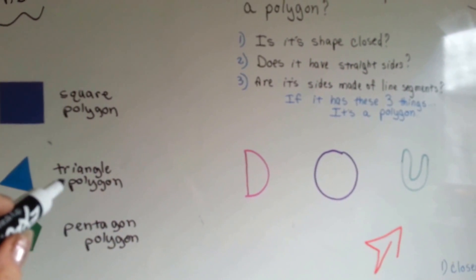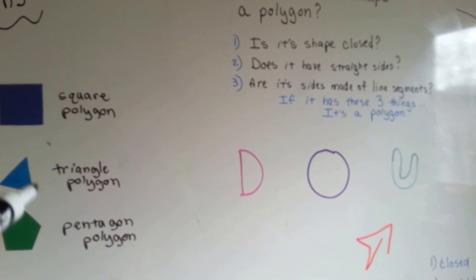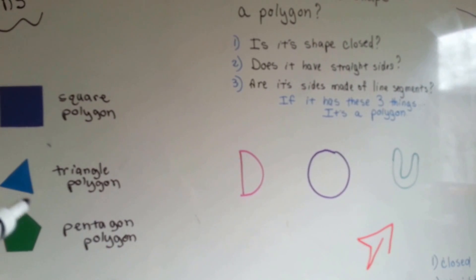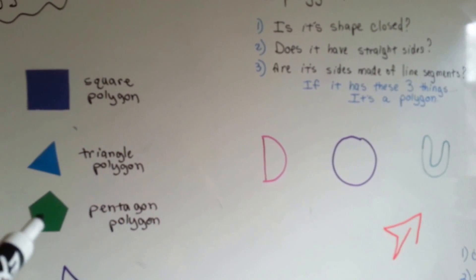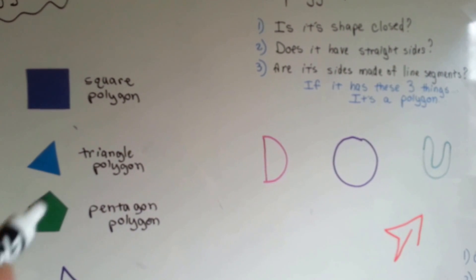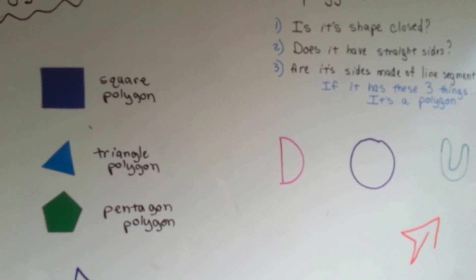Here's a triangular polygon with a closed shape, straight sides, and its sides made of line segments. Here's a pentagon with straight sides, it's closed, and its sides are made of line segments.